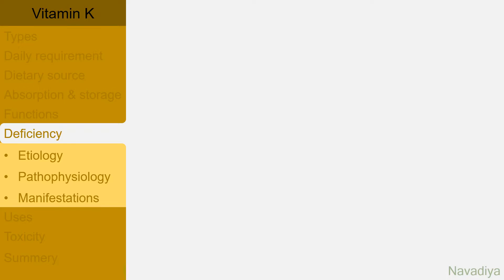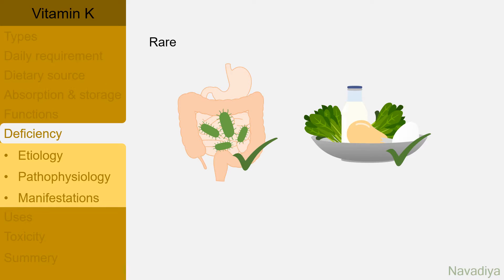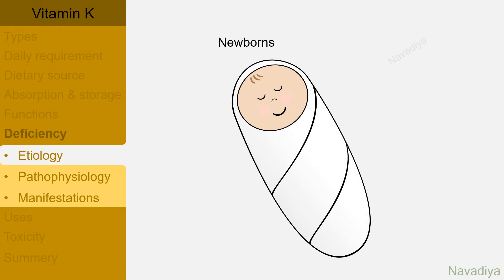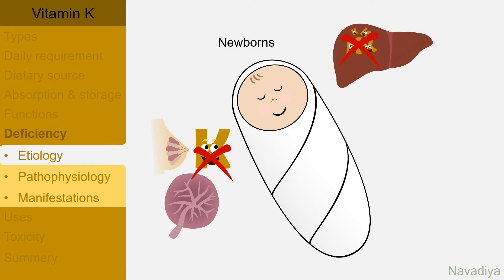Vitamin K deficiency is rare as it is synthesized by our intestinal bacteria and enough quantity is usually present in diet. Yet it is seen in newborn babies. They are susceptible to vitamin K deficiency because vitamin K does not cross the placenta or enter into breast milk in enough quantity. They have very low stores of vitamin K and also they lack intestinal microflora.